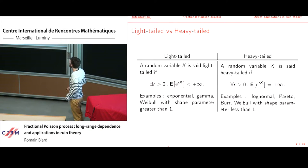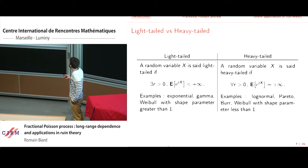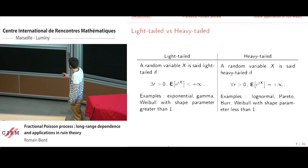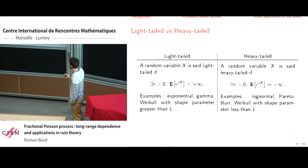Just the difference between light-tailed and heavy-tailed distributions. A random variable X is light-tailed if there exists a constant R such that the moment generating function is finite. Examples include the exponential distribution, the gamma distribution, the Weibull with shape parameter, etc.